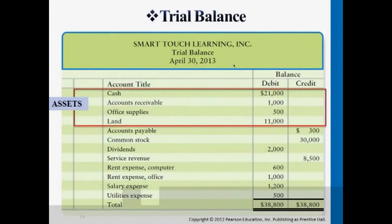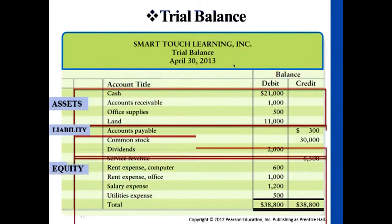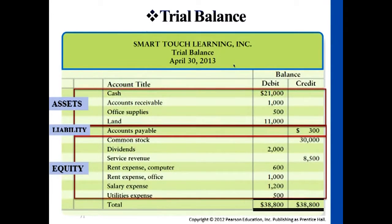Let's take a look at a trial balance example. Here's a trial balance for April 30th, which summarizes all the transactions that happened in April for the entire month. We start by listing all the asset accounts: cash, accounts receivable, office supplies, land — and then liability accounts and equity accounts.